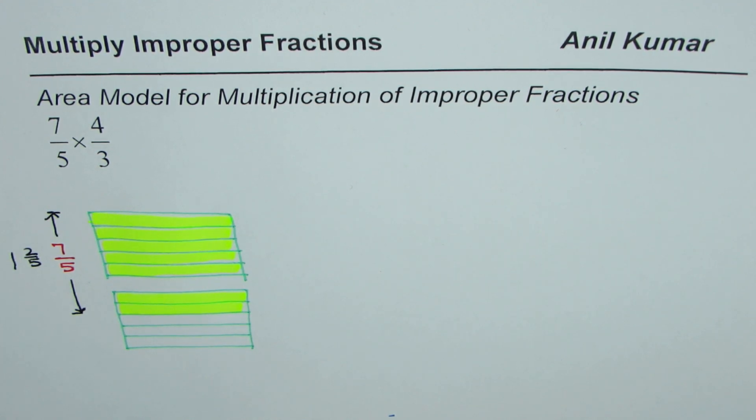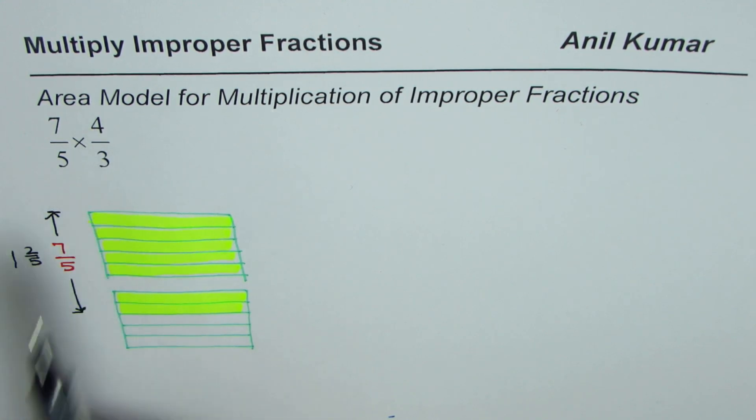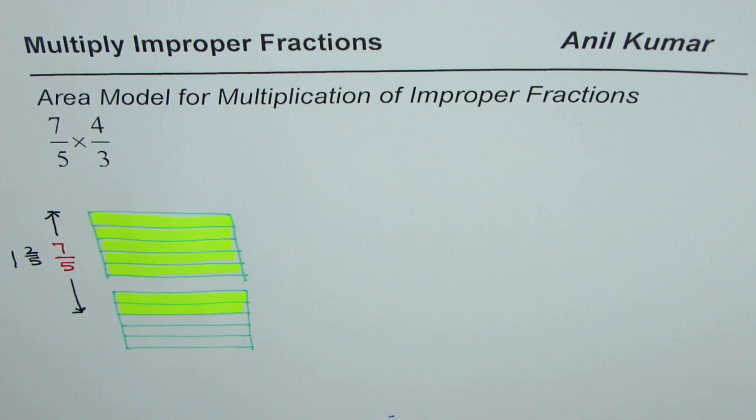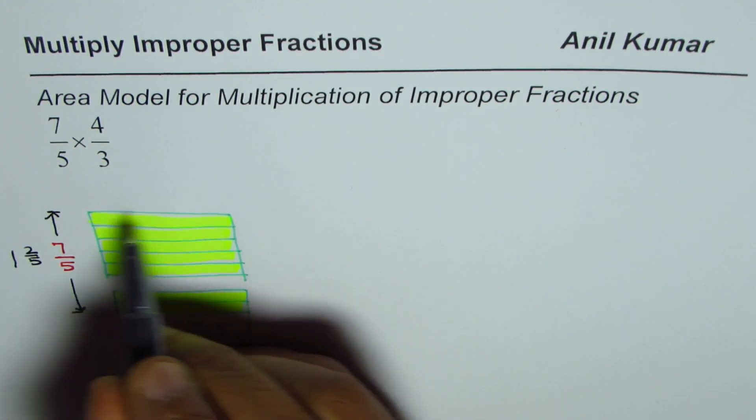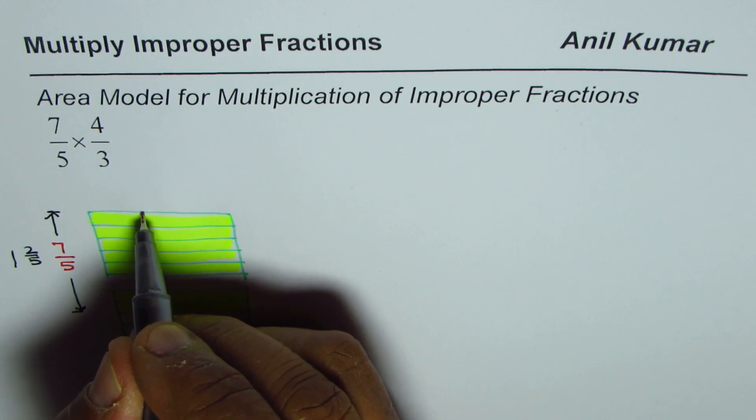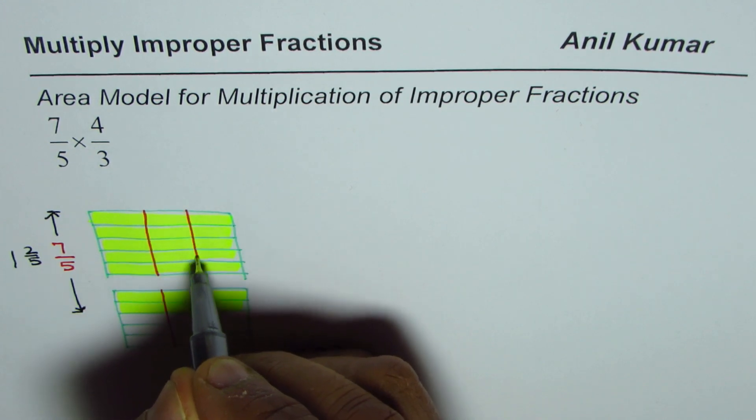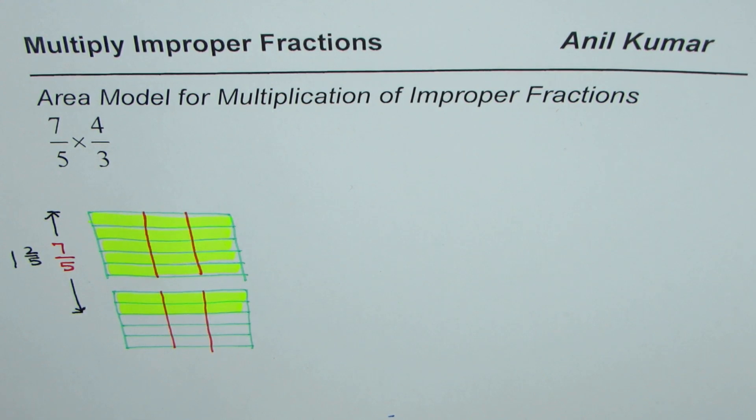So 7 out of 5. Now when we multiply by 4 over 3, it means what? 3 tells us how many parts should we divide the area into. 3 equal parts. So that means 3 equal parts. Now here, we have these 2 rectangles. Let's divide them into 3 equal parts. Let's say this is 1, 2, and that is the third one. So 3 equal parts.